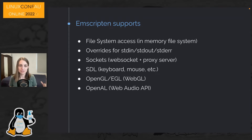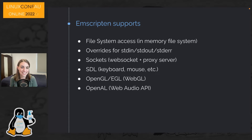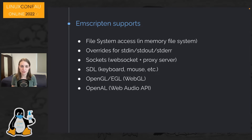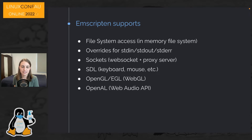Emscripten stubs out things your C code might normally get from the operating system. It supplies this fake in-memory file system, overrides for standard in, standard out, and standard error. It has a sockets implementation using a proxy server and WebSocket to get past browser limitations. It has bindings for SDL so you can use keyboard and mouse input, draw to a canvas using WebGL through OpenGL libraries. Emscripten supplies a lot of the bindings needed to run applications that would normally interface with the operating system.